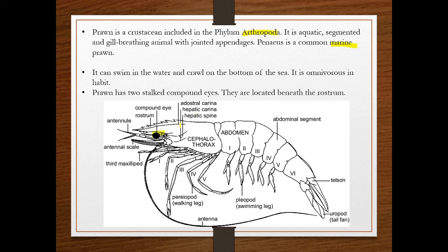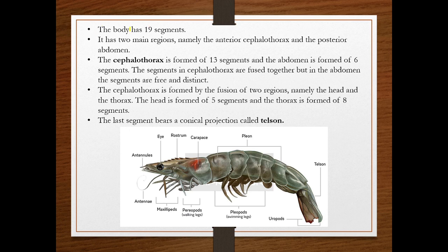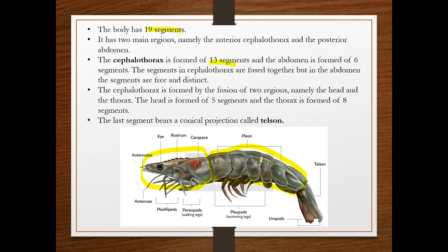The body has 19 segments in total. From the front, there are six segments in the cephalothorax head region, and from here to the tail region there are 13 segments. So six plus 13 equals 19 segments total. This anterior region is called the cephalothorax, composed of 13 segments, and the posterior region is called the abdomen, which is formed of six segments.